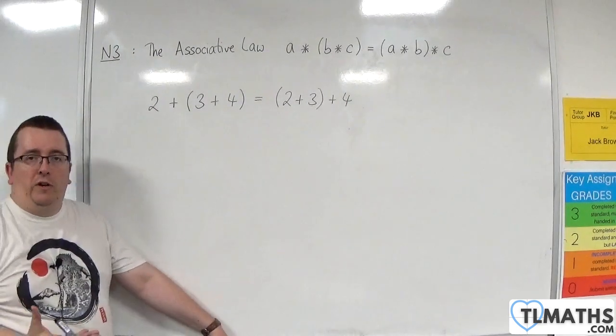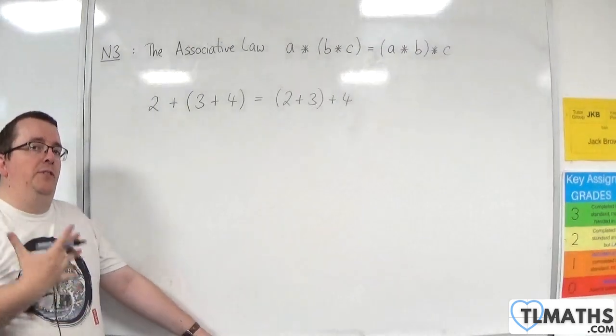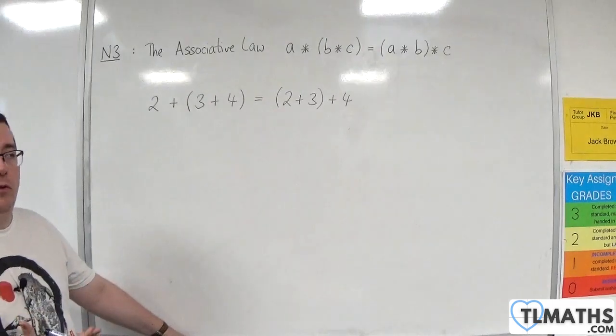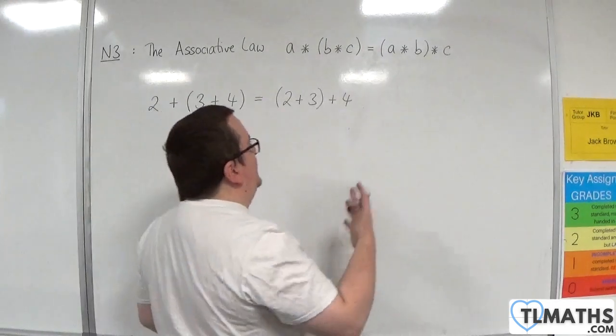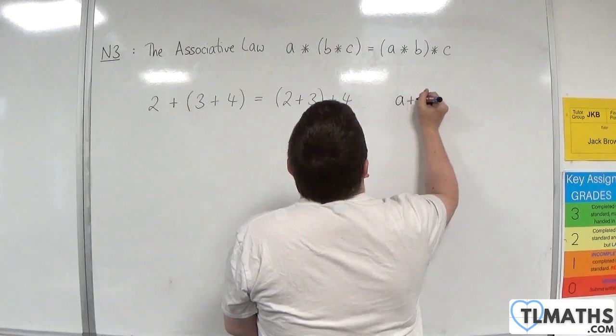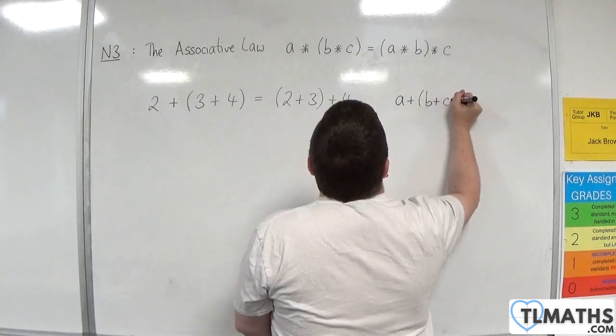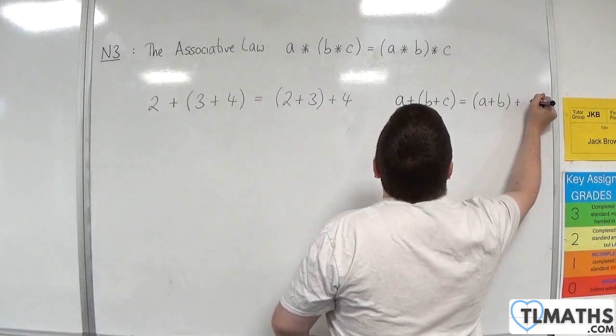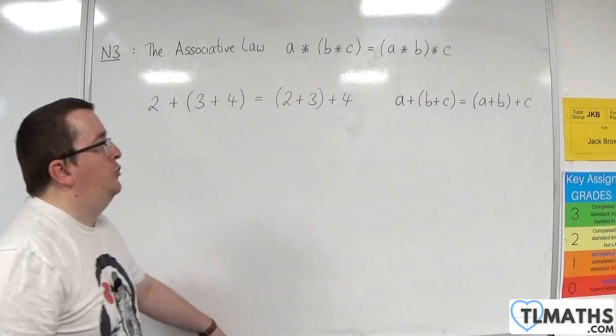Now, although that is just one example, we know that addition is true under the associative law. So addition is associative. So we can say A plus B plus C in a bracket is always going to be the same as A plus B in a bracket plus C. That is true.